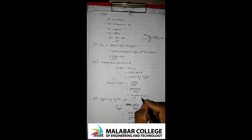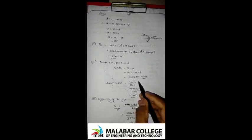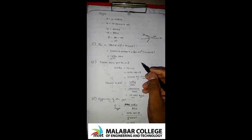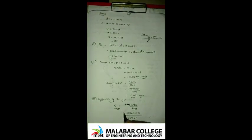After substituting all values, the work done per second is computed as Fx × u, and the efficiency is calculated as work done per second divided by (1/2)·ρ·A·V³. The jet efficiency comes out to 0.564, which is 56.4%.